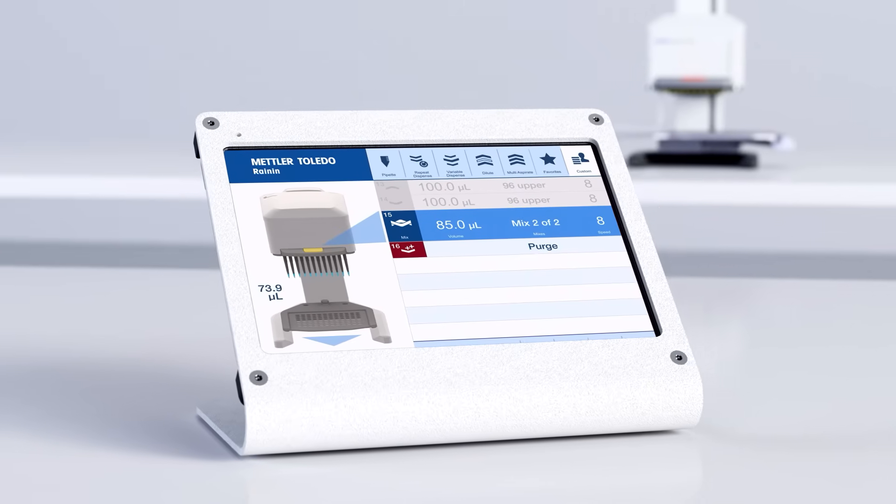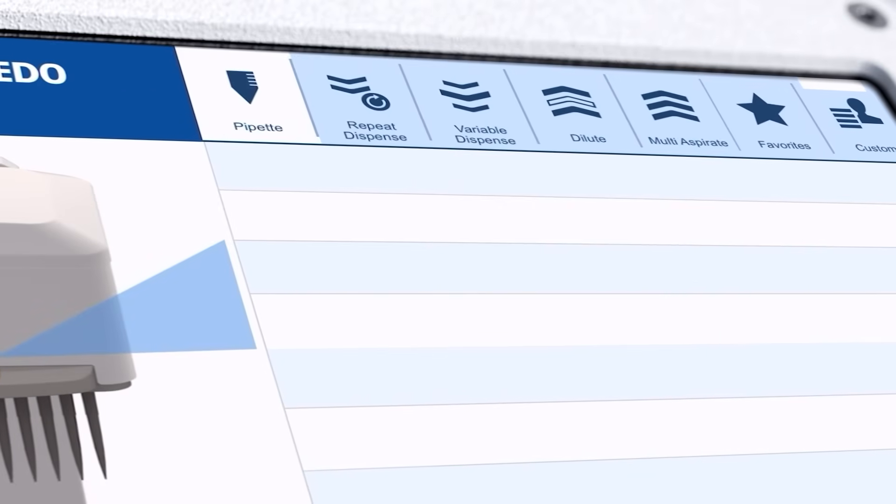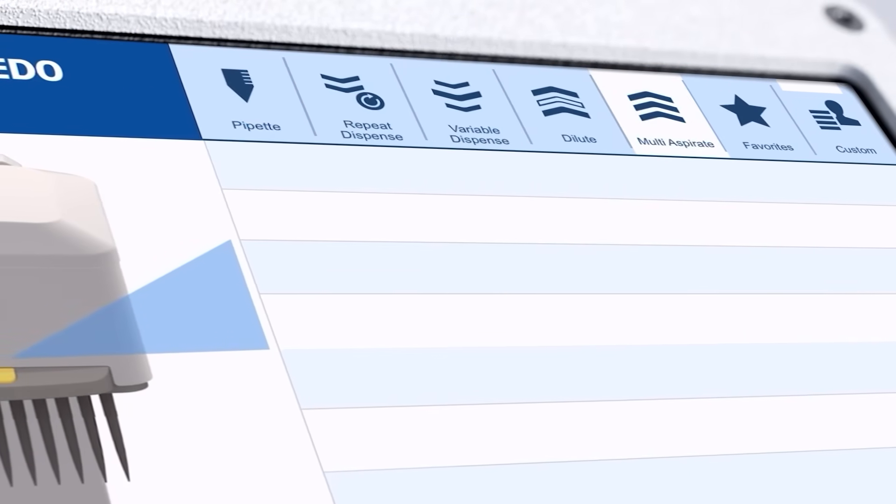The MicroPro app walks an operator through the workflow in modes like pipette, repeat, dispense, and multi-aspirate.